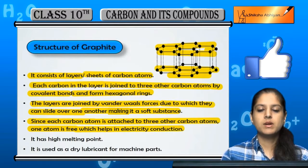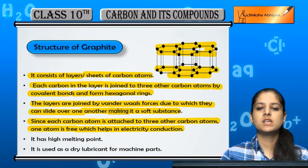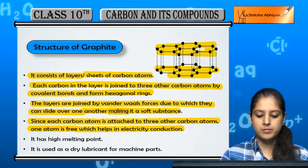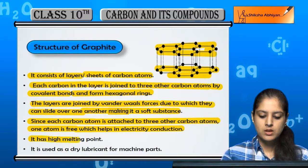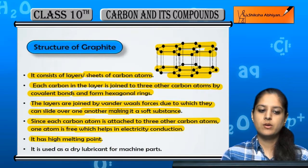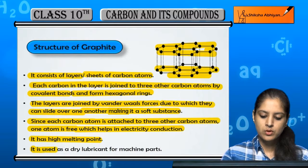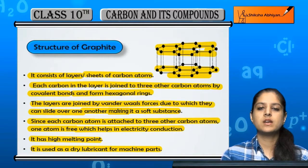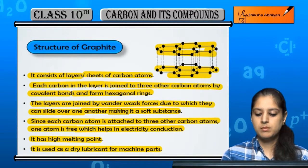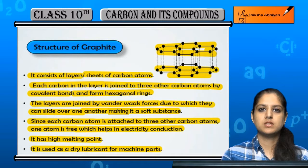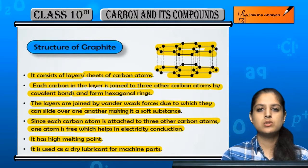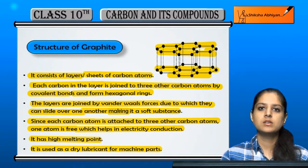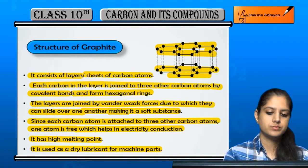This free electron ultimately helps in electrical conduction. The melting point of graphite is high, and we use it as a dry lubricant for machine parts because it is very soft.